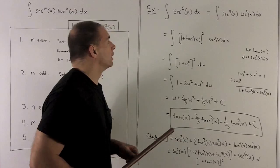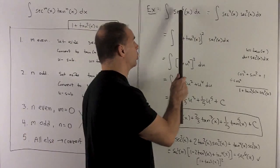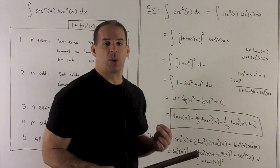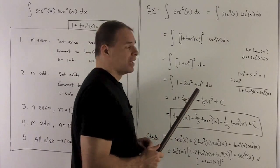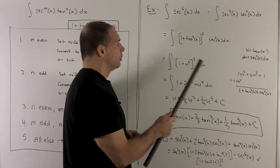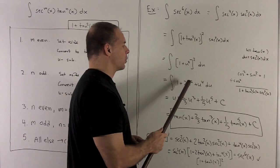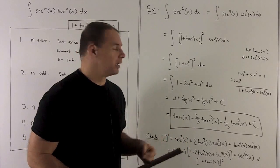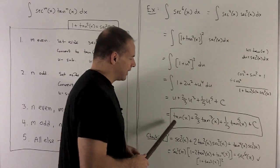Let's look at the first example: the integral of sec⁶x. That's an even power, so the trick is to set two of them aside and turn what's left over into tangent. We're left with sec⁴x; since sec²x = 1 + tan²x, we get (1 + tan²x)². Now substitute u = tan x, so du = sec²x dx. We get the integral of (1 + u²)² du, which expands to 1 + 2u² + u⁴ du. Integrating gives u + (2/3)u³ + (1/5)u⁵, and substituting back gives the answer in terms of tan x.